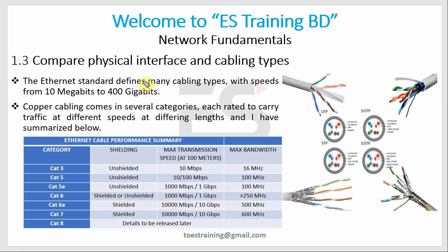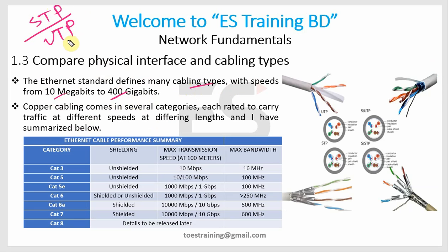Ethernet standard defines many cabling types with speeds from 10 megabits to 400 gigabits. The Ethernet standard defines cabling types such as Cat 3, Cat 5, Cat 6, and the most utilized cabling types — STP and UTP.